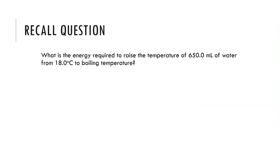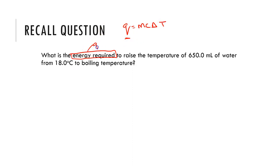So if we think about this, we can use the same sort of calculations as we did in Unit 3. This question asks us what is the energy required to raise the temperature of 650 mils of water from 18 degrees C to the boiling temperature. We're looking for the energy required, remembering that in Q equals mc delta T, Q is the heat energy — so this is what we're looking for.